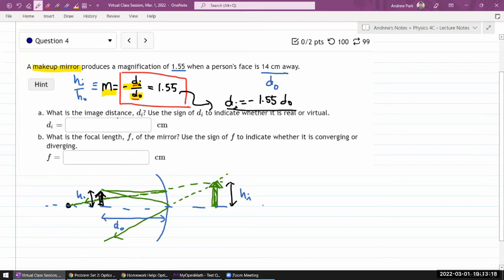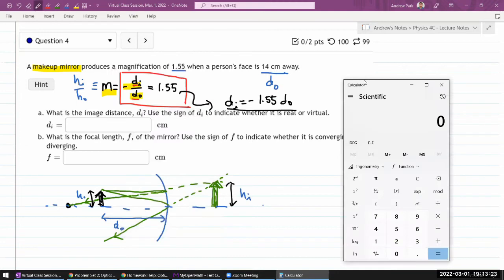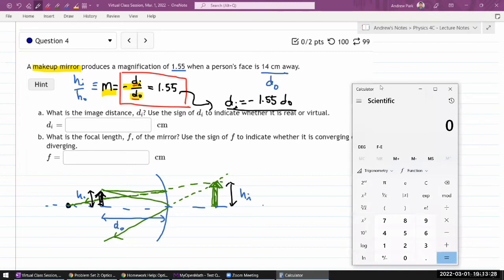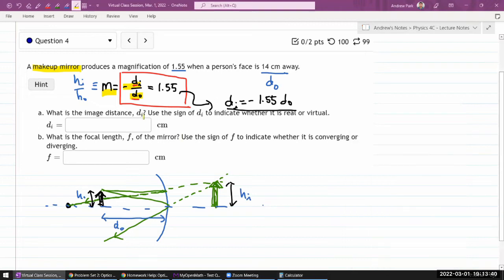So in this class, I don't normally plug in numbers because the questions in this class are complicated enough that if I plug in numbers each time, I will run out of time. But I think this I can do. It's simple enough. So minus 1.55 times 14. Okay. So minus 21.7 centimeters. And here the question directions are telling you to use the sign. So I will give the answer as a signed quantity, minus 21.7 centimeters.